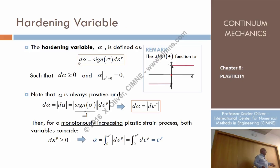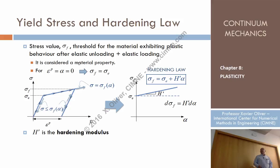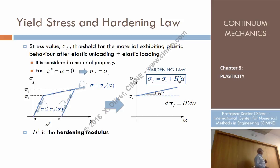When we start moving into the plastic regime, we start generating plastic strain, and according to the hardening equation, we also generate alpha. So alpha increases, and that means the yield stress sigma_f increases too according to this formula.